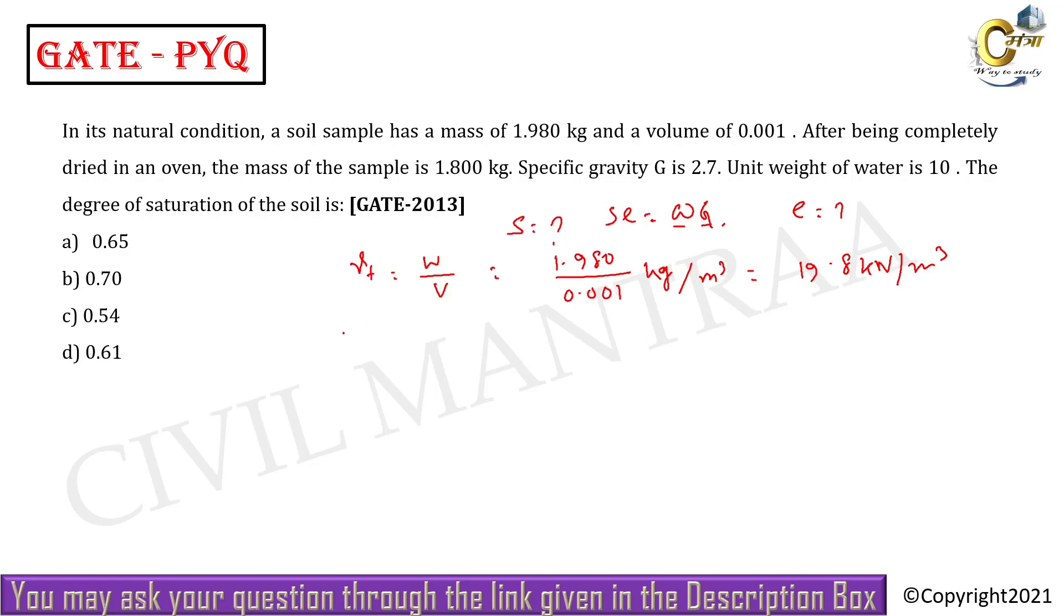And after oven drying, the soil sample weight became Ws, that is 1.800. So Ws by V, that is 0.001. This equals 18 kN per meter cube. So from this we know that...